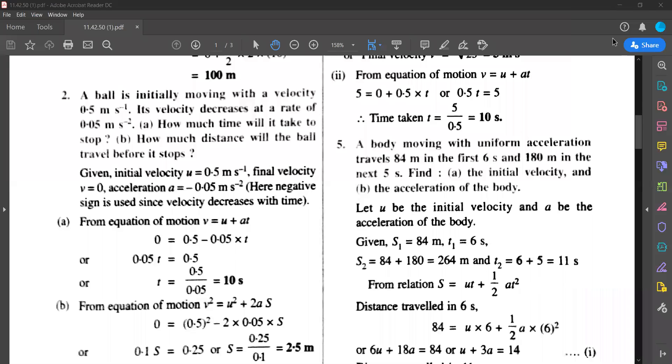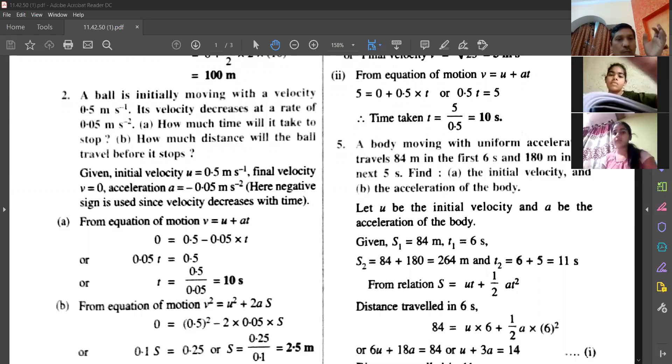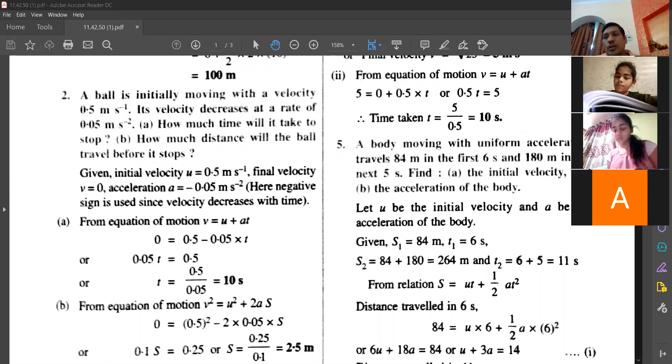So here also we have given the acceleration in the equation. a equals to, that doesn't mean copy, a equals to 0.05 meter per second squared.